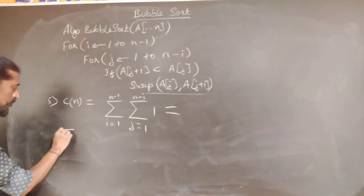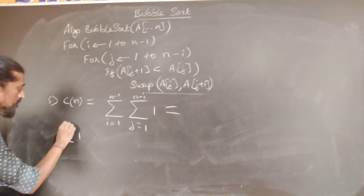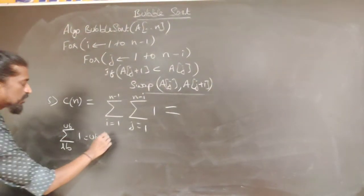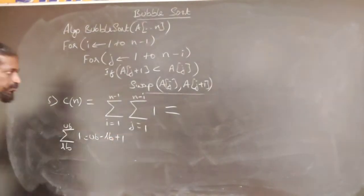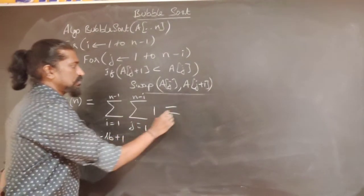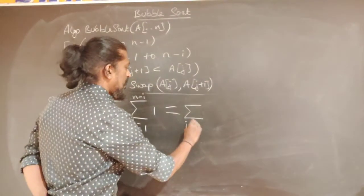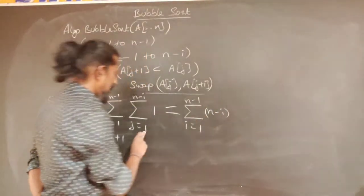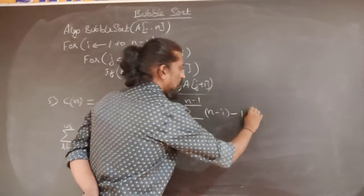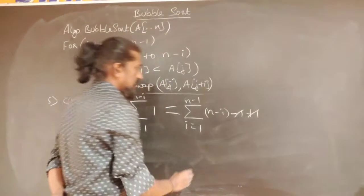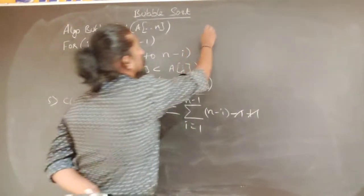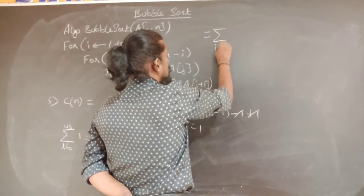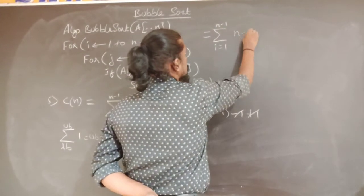Using the formula: Σ (j=lower to upper) 1 = upper - lower + 1, the inner summation Σ (j=1 to n-i) 1 = (n-i) - 1 + 1 = n-i. So C(n) = Σ (i=1 to n-1) (n-i).